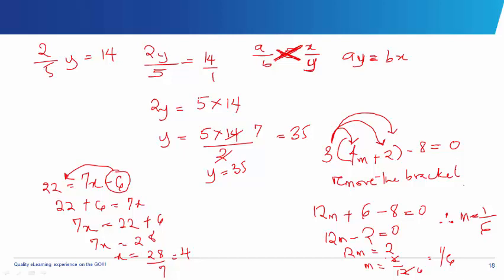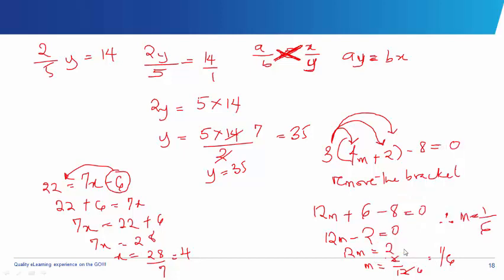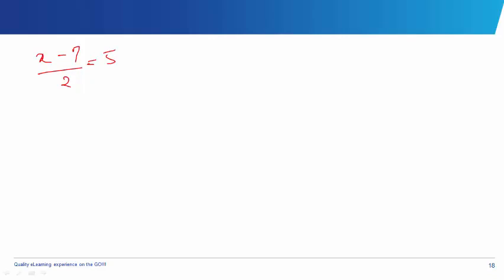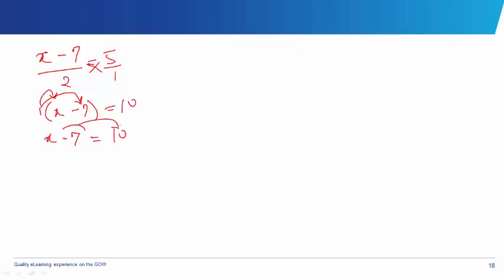Now let's look at equations with fractions. We have: x minus 7, all over 2, equals 5. This is the same as 5 over 1. We cross multiply, giving us 1 times (x minus 7) equals 2 times 5, which is 10. Multiplying through: 1 times x is x, and 1 times minus 7 is minus 7, equals 10. Taking minus 7 to the other side becomes plus 7, so x equals 10 plus 7. Therefore x equals 17.